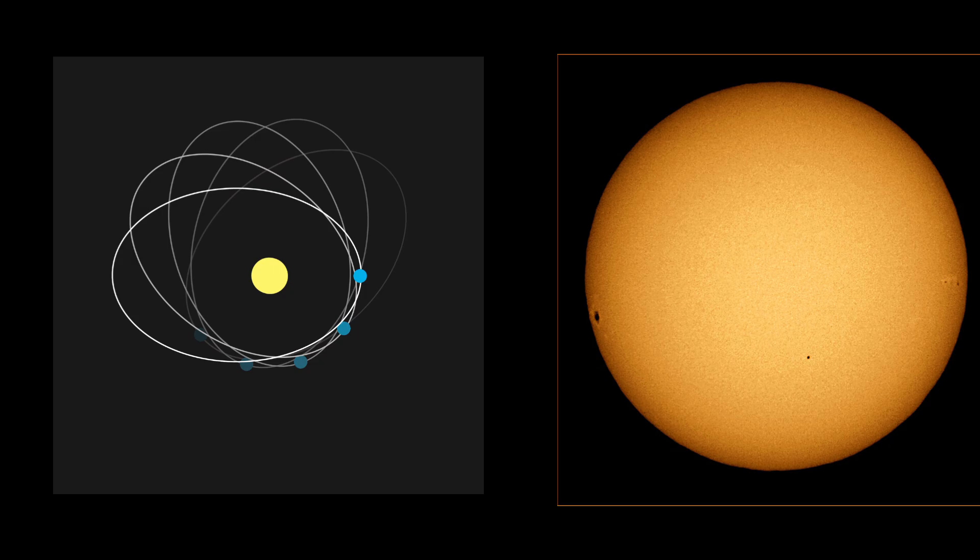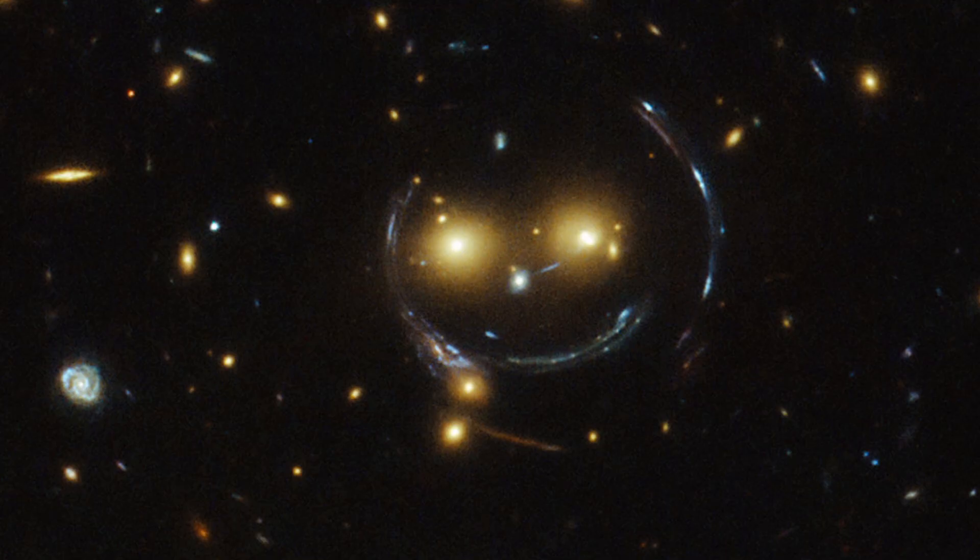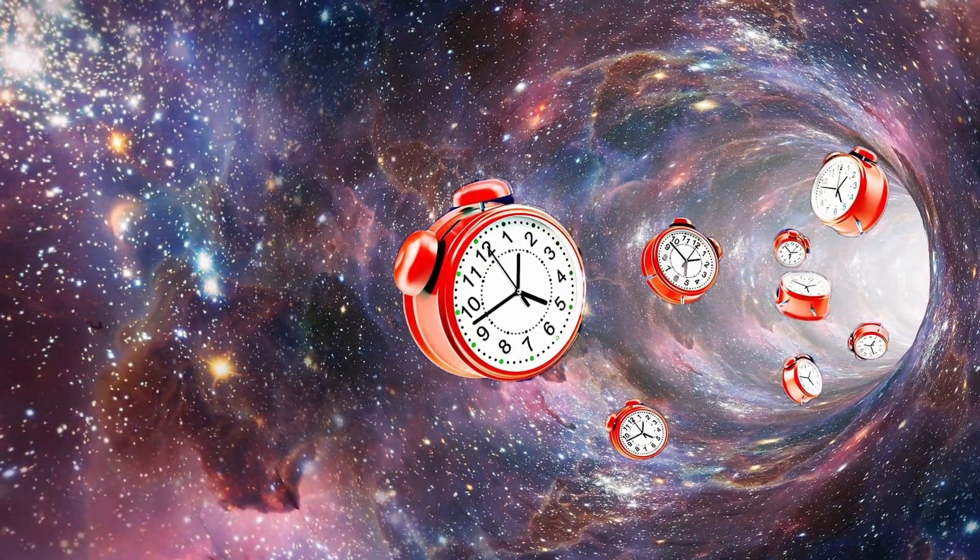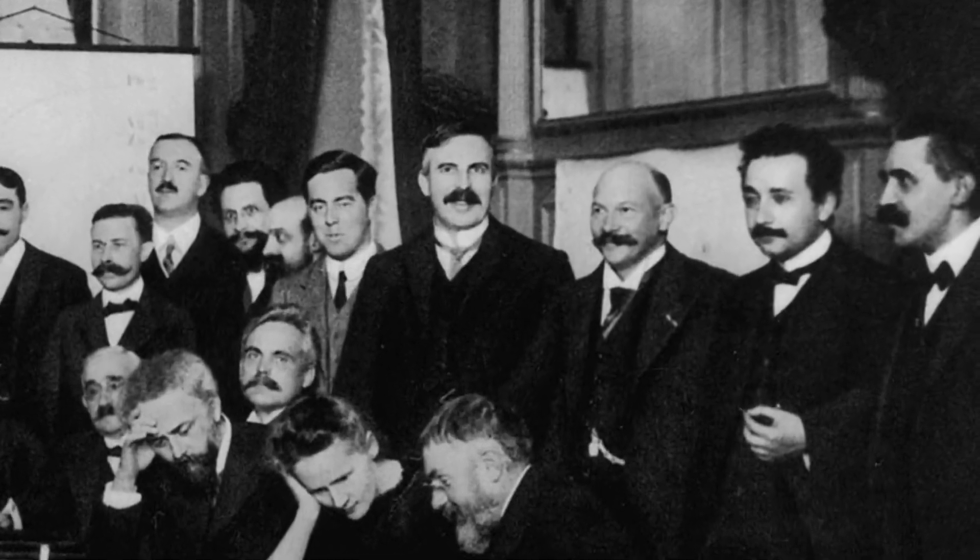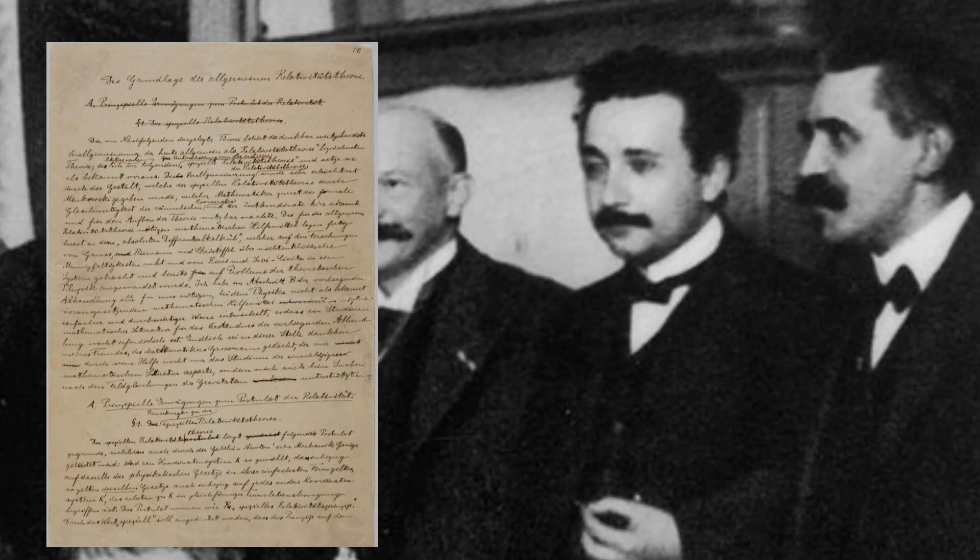Like for instance Mercury's orbit, gravitational lensing, gravitational time dilation and so on, so scientists eventually accepted the theory. It worked and you could make useful predictions with it.